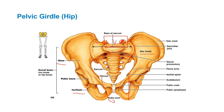Looking at the anterior view, the coccyx starts right here and this is all sacrum. The sacrum has anterior and posterior sacral foramina. There are a couple of landmarks I want to bring to your attention: the anterior superior iliac spine, and then the anterior inferior iliac spine. Here's the pubic symphysis — that's where the joint of the pubic bones come together, which is a fibrocartilage disc. This is the obturator foramen.